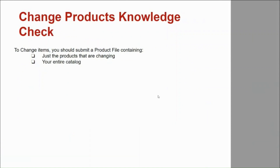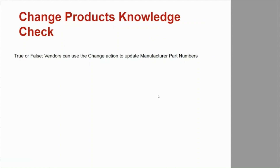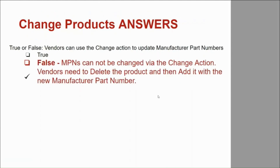Time for a knowledge check. To change items, you should submit a product file containing just the products that are changing — not your entire catalog. Including additional items will slow down processing time. True or false: vendors can use the Change action to update manufacturer part numbers. False — MPNs cannot be changed via the Change action. Vendors need to delete the product and then add it back with the new manufacturer part number. This concludes the Changing Products training module. Thank you for watching.